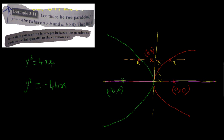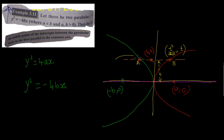Since y = t, for the first parabola y² = 4ax, x will be equal to t²/4a. So the intersection point on the first parabola is (t²/4a, t). For the second parabola y² = -4bx, y is again t and x will be equal to -t²/4b. So the intersection point on the second parabola is (-t²/4b, t).